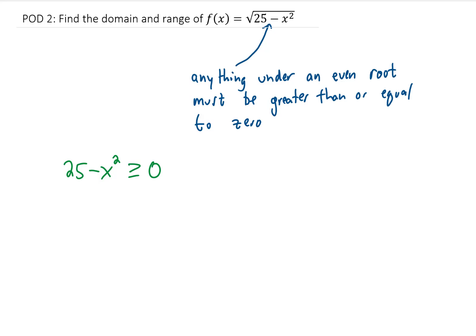Well, there are a lot of ways to finish this problem. Let's start by trying to get x by itself. We're going to add x squared to both sides of this inequality. That gives us 25 is greater than or equal to x squared, which is the same thing as writing x squared is less than or equal to 25. One way to complete this problem in this fashion would be to take the square root of both sides of this inequality.